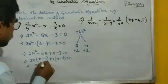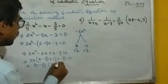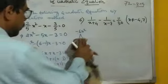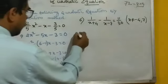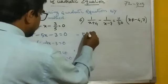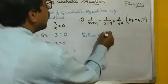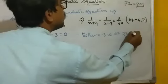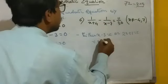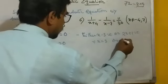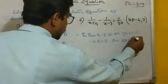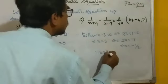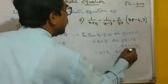So it will be (2x plus 1)(x minus 3) equal to 0. Therefore, either x minus 3 equal to 0 or 2x plus 1 equal to 0. This gives x equal to 3, or 2x equal to minus 1, so x equal to minus 1 by 2.